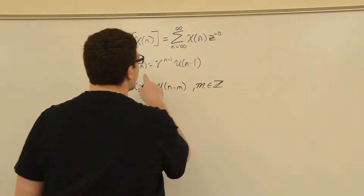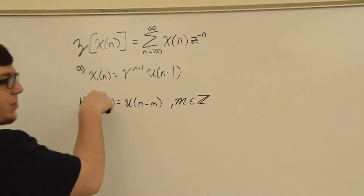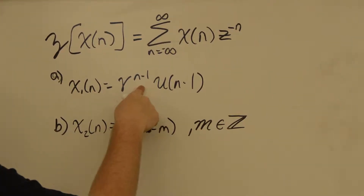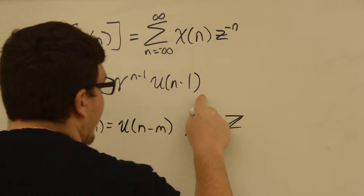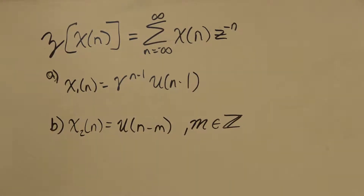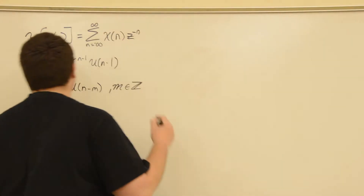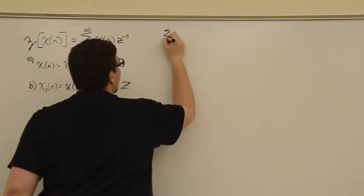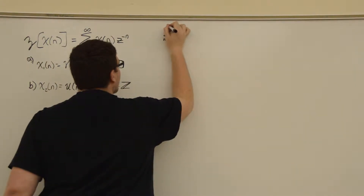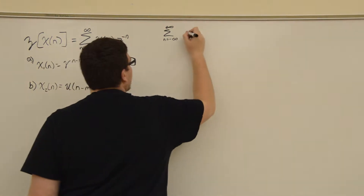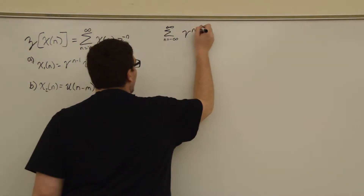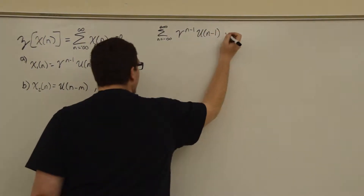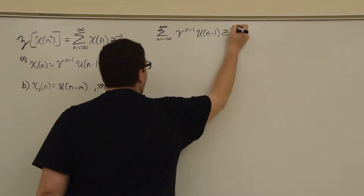The first function we're going to take the Z-transform of, just by applying the formula, is x1 of n equals gamma to the n minus 1, times u of n minus 1. We're just going to directly apply our formula and see what we get. So we have the sum from n equals negative infinity to infinity of gamma to the n minus 1, u of n minus 1, times z to the minus n.